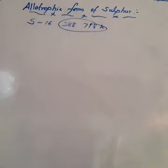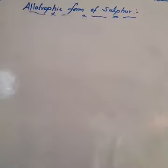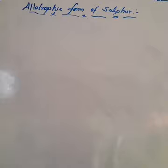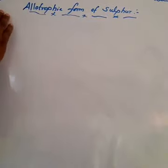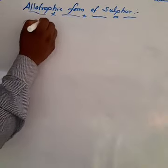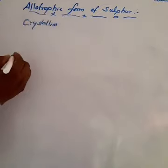Now we are discussing the allotropic forms of sulfur. Allotropy means the same element existing in more than one form in the same physical state — different crystalline forms. Sulfur exists in both crystalline and amorphous allotropic forms.